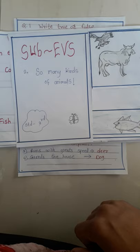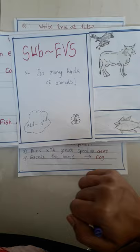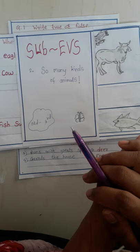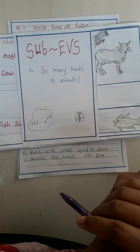Hi students, today we are going to learn an interesting topic on EBS. Our topic name is 'So Many Kinds of Animals' for Standard Third students. Do you know animals? Yes, tell me some animal names. Horse, peacock, cow, fish.